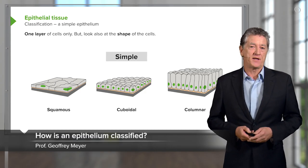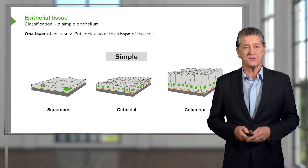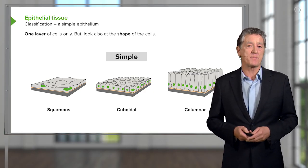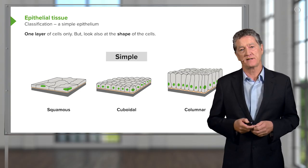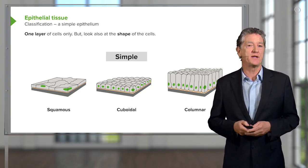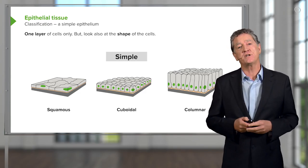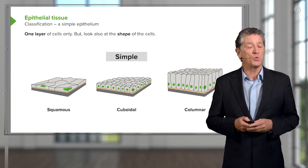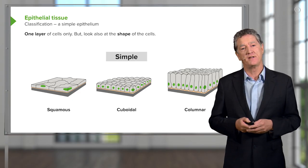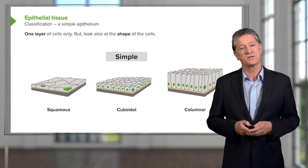Let's now look and see how epithelium is classified or named. The first thing to do when you look at an epithelium is decide how many cell layers make up the epithelium. If there's only one cell layer, as you see in these diagrams, we call the epithelium a simple epithelium. And the second thing we do is we look at the shape of the cells. If the cells are a lot wider than they are in height, or they're flattened, we call it a simple squamous epithelium.